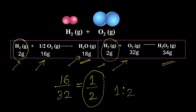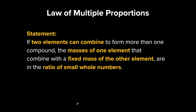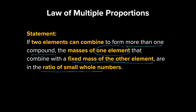This is a law given by John Dalton in 1803, and it is called the law of multiple proportions. It states that if two elements can combine to form more than one compound, the masses of one element that combine with the fixed mass of the other element are in the ratio of small whole numbers.